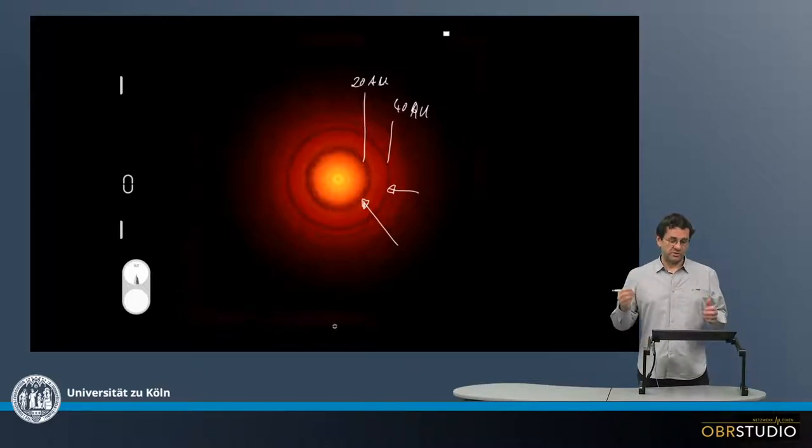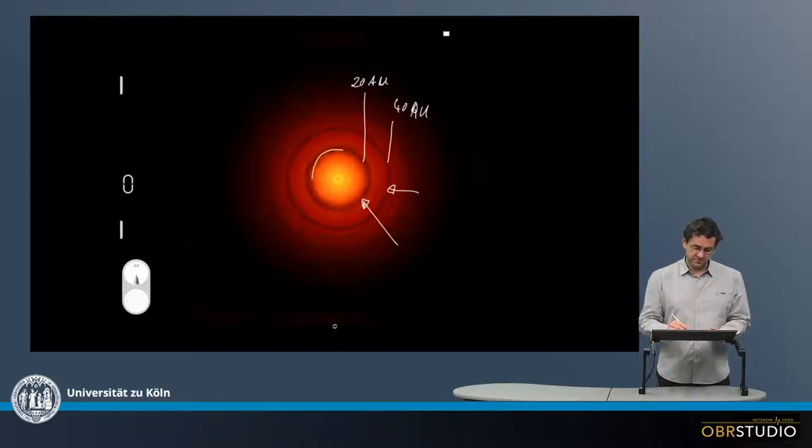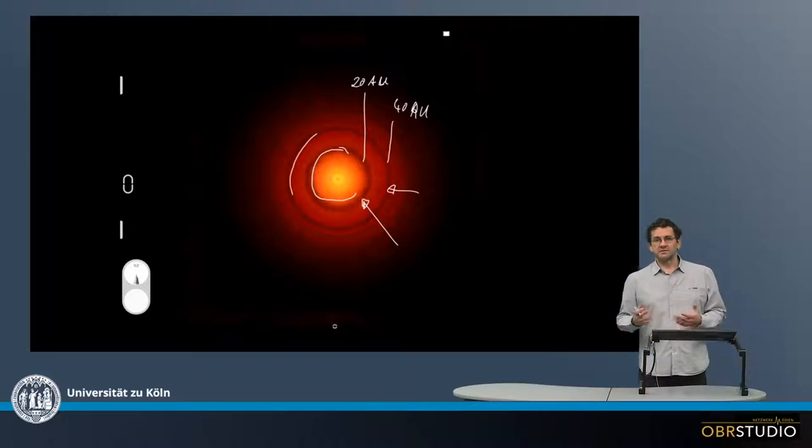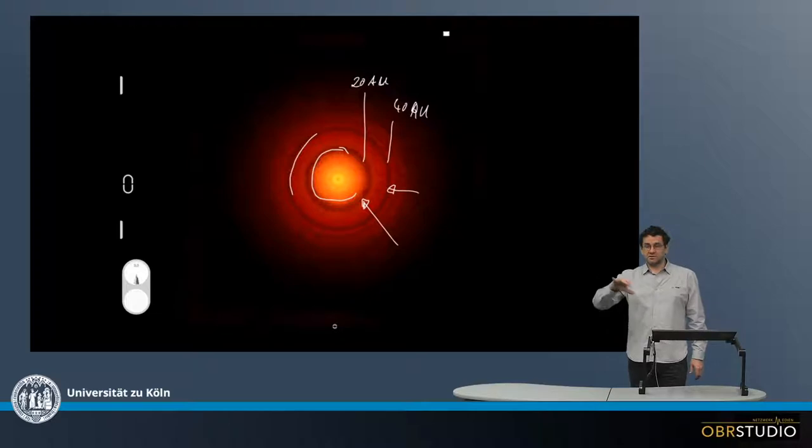And it is quite possible that what we see here in these openings, in these rings, has been produced by planets sweeping up and aggregating all the dust in these regions.